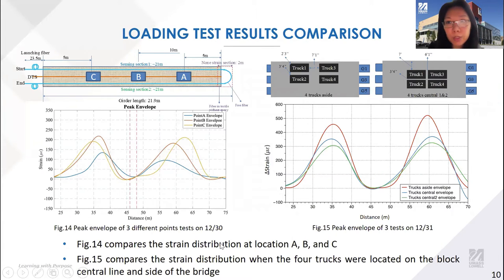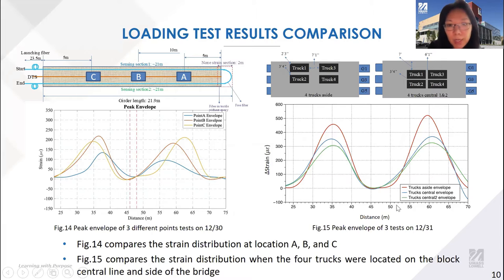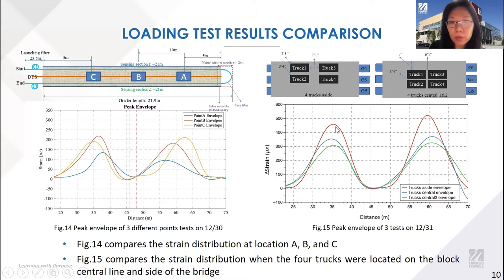This slide summarizes the previous two days' field test results. In Figure 14, the blue, red, and yellow curves show strain distribution when trucks were stopped at positions A, B, and C respectively, with peak strain values corresponding to each truck position. Figure 15 shows higher strain response in girder 1 when trucks were located closer to it (red curve) compared to when trucks were at the bridge center (blue and green curves). The preliminary results indicate that the optical fiber sensing textile can measure strain in real time, and results will be further compared with strain gauges.